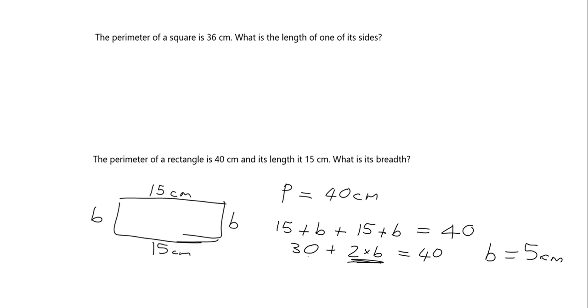Just check that 30 plus 2 times 5, that's 10, gives you 40. And I solved this by saying 30 plus what would give me 40? Well, this thing here had to be 10. And two times what gives me 10? The answer here will be 5. Just solving that equation by inspection quite simply.